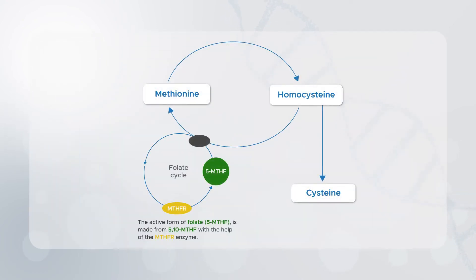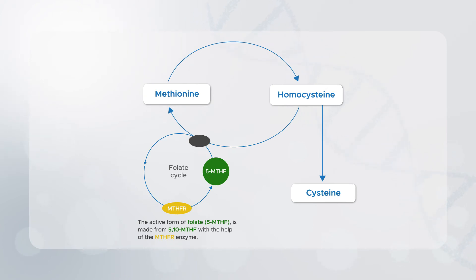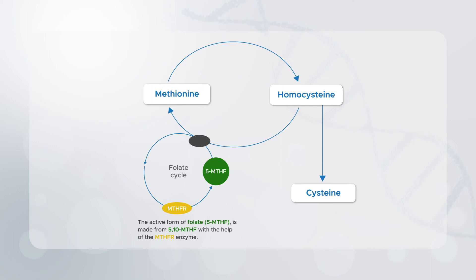Folate, the natural form of vitamin B9, is needed to help recycle homocysteine back to methionine. The MTHFR enzyme helps your body convert folate to the active form 5-MTHF through a process called methylation. If the body can't convert folate properly, homocysteine can't be recycled back to methionine.